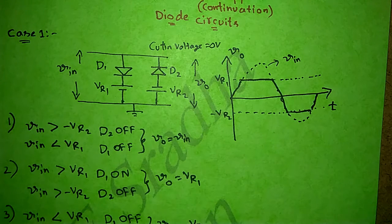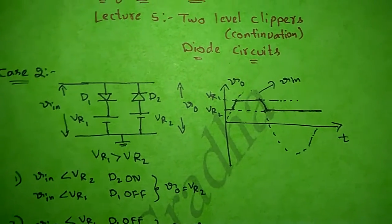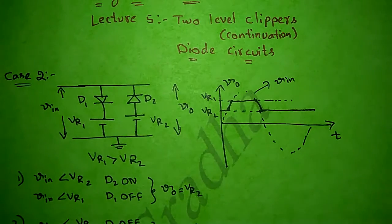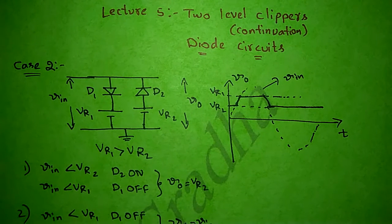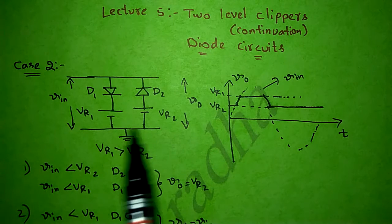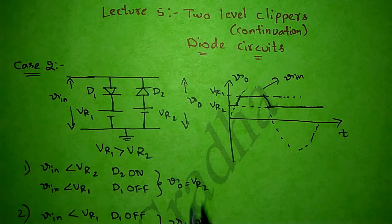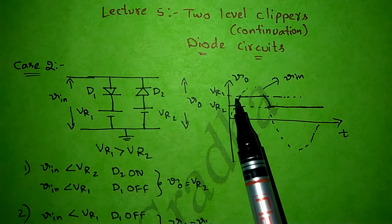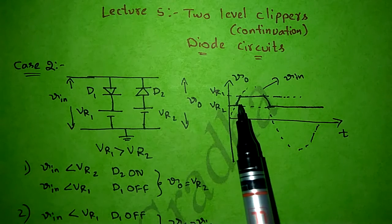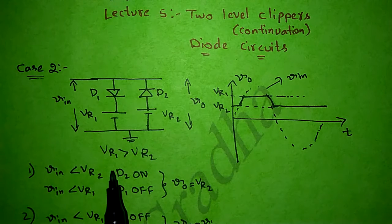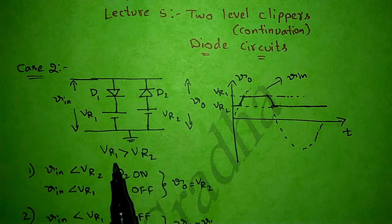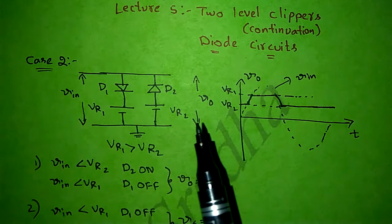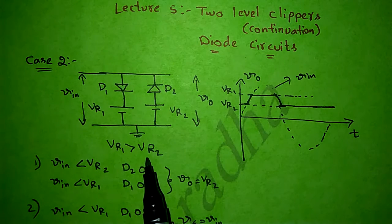Now in Case 2, I considered the same circuit from the previous class, but here VR1 and VR2 are both positive, so I represented both reference voltages on the positive side only. The important point is the comparison of both reference voltages — whichever is greater must be mentioned accordingly in the graph. Since VR1 is greater than VR2, I placed VR1 above and VR2 below.